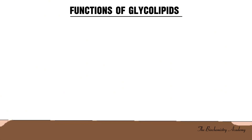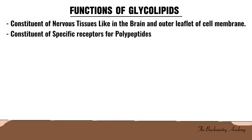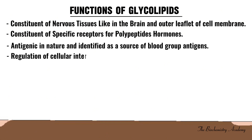The general functions of glycolipids include: they are constituents of the nervous tissues such as the brain, and also of the outer leaflet of the cell membrane. They are constituents of specific receptors for polypeptide hormones. They are antigenic and have been identified as a source of blood group antigens. They also play a role in the regulation of cellular interaction, growth, and development.